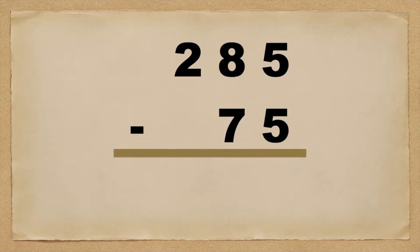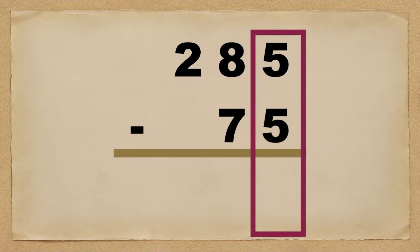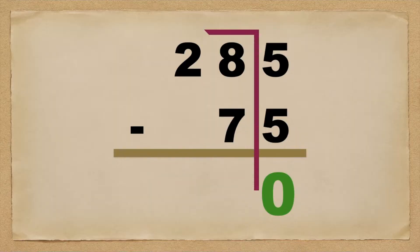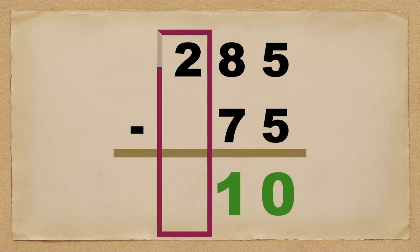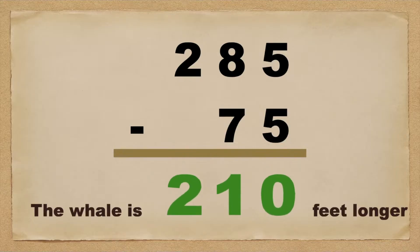Let's write the solution. In writing the solution, you need to align the numbers according to their place value, and we're going to start subtracting from the ones place. So 5 minus 5 is equal to 0. Next, 8 minus 7 is equal to 1. Then, we're going to bring down the 2. The final answer is: the whale is 210 feet longer.